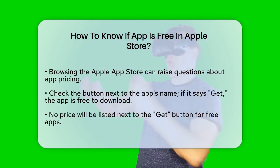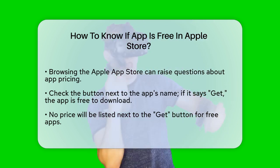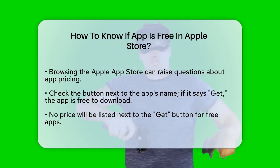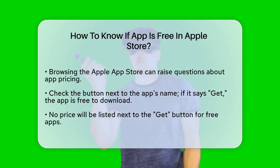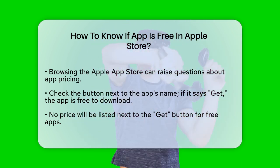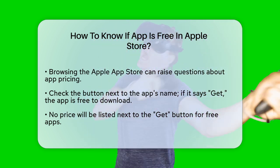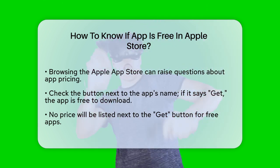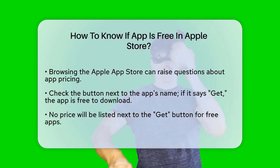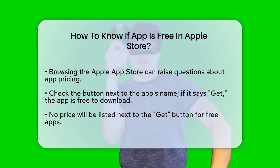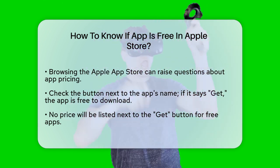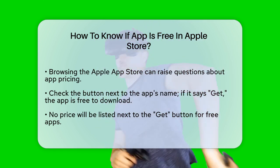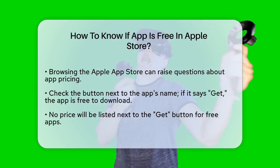When you find an app you're interested in, the first thing to look at is the button next to the app's name. If this button says 'Get', it means the app is free to download and install. There won't be any price listed next to it.